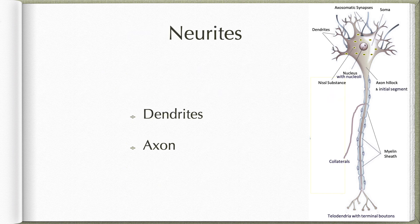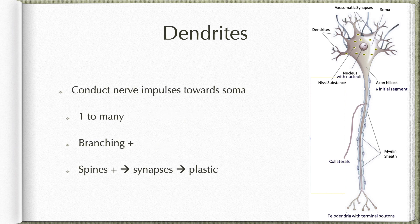Two types of neurites are present: dendrites and axon. Dendrites conduct nerve impulses towards the soma. Their number varies from one to many, and usually these are branching processes showing spines on the surface which mark the site of synapses.